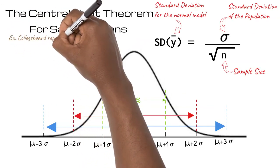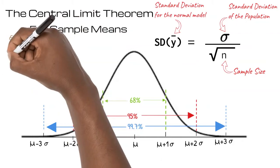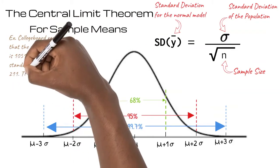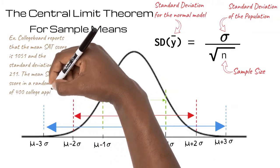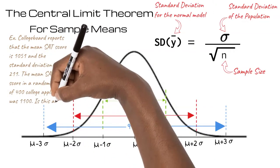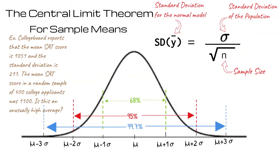College Board reports that the mean SAT score is 1051 and the standard deviation is 211. The mean SAT score in a random sample of 400 college applicants was 1100. Is this an unusually high average? We know that the sample was randomly collected, so assuming the sample is large enough, we can use a normal model.